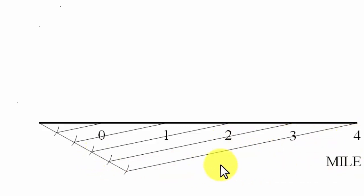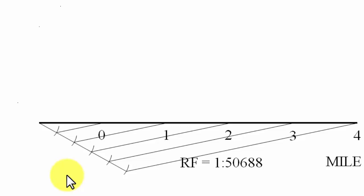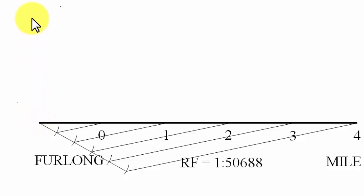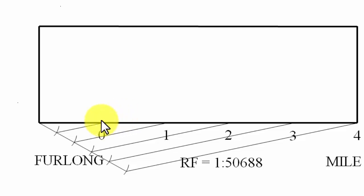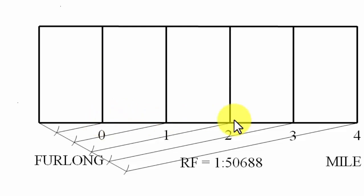Toward the right of zero we have miles as the unit. In the center we place the RF label, and toward the left of zero we have the immediate smaller unit — furlongs. For diagonal scales we need to give the scale some height; I suggest five centimeters, though you can go up to six or seven. Join the endpoints, draw vertical lines from the zero, one, two, and three mile marks — that forms the overall skeleton of the diagonal scale.